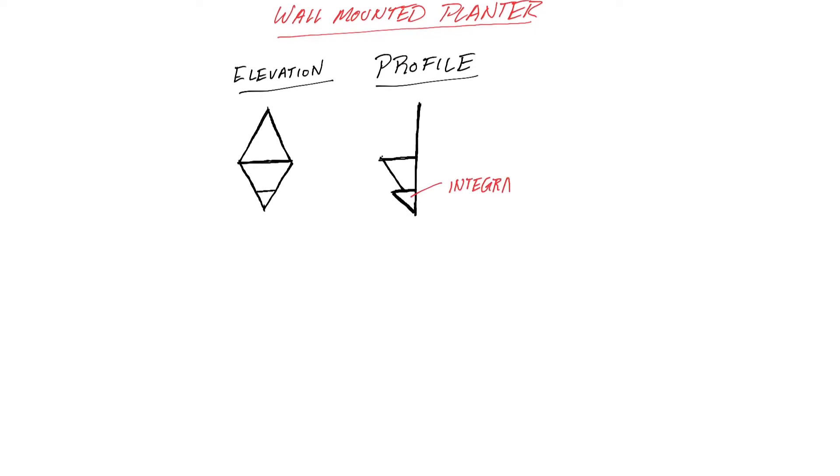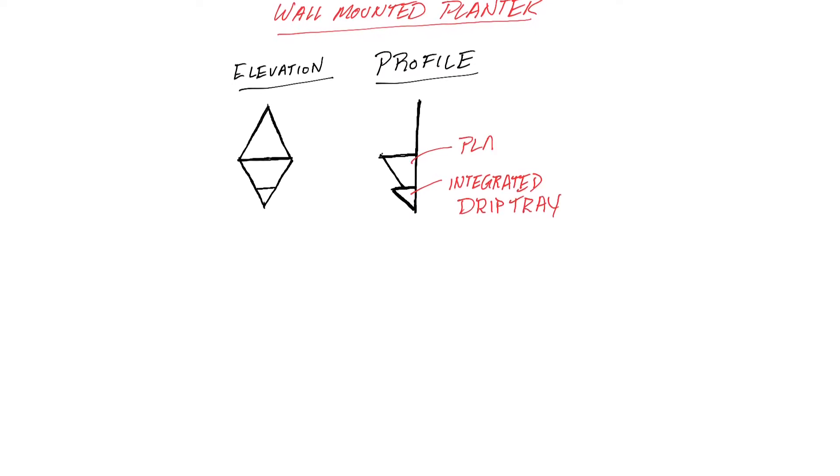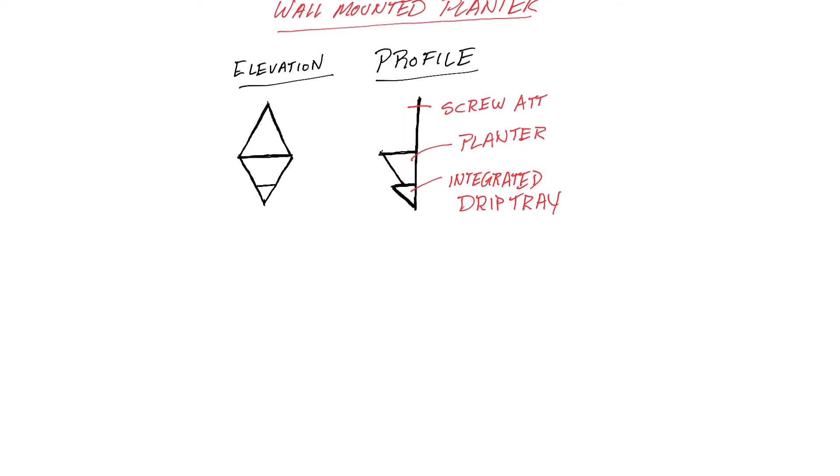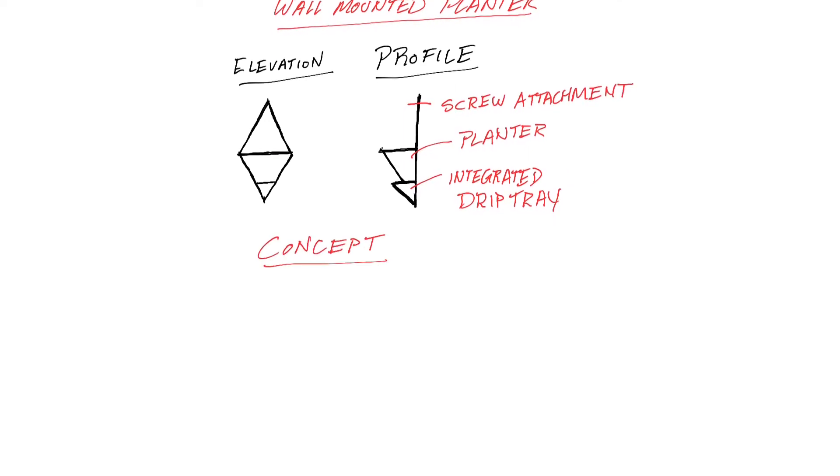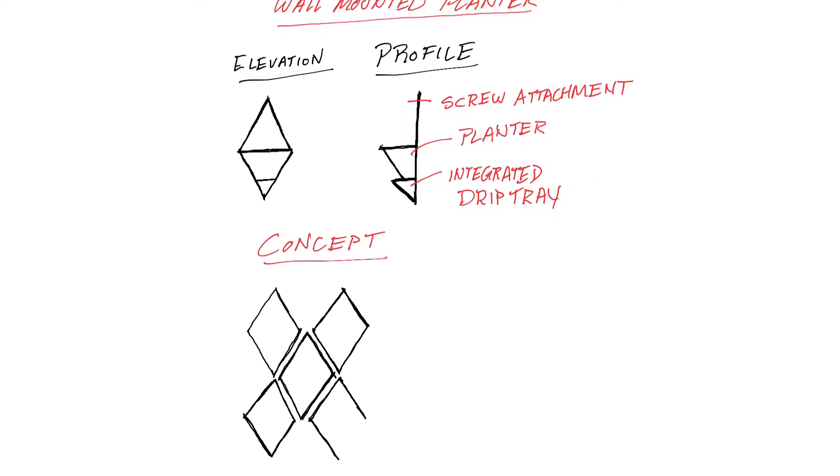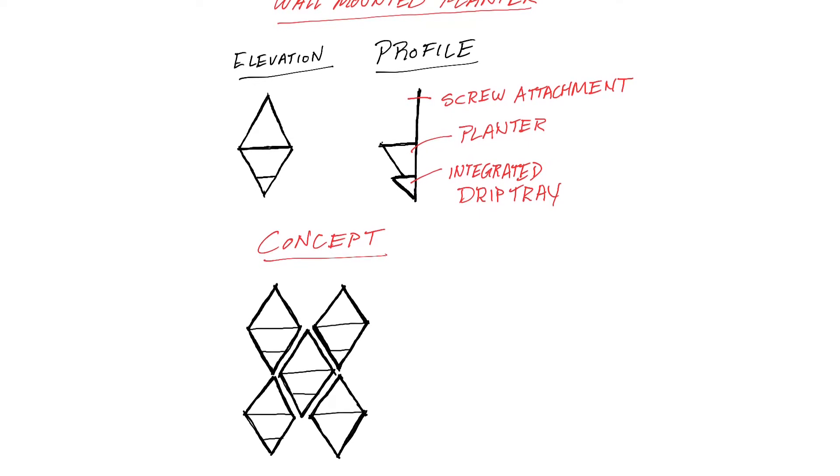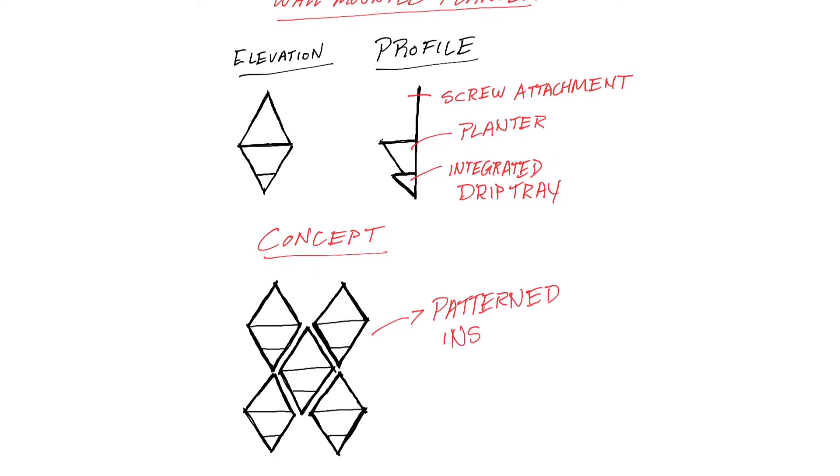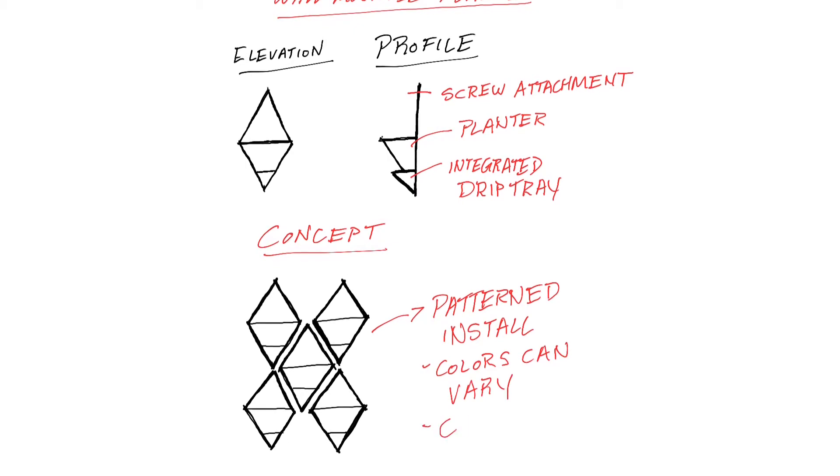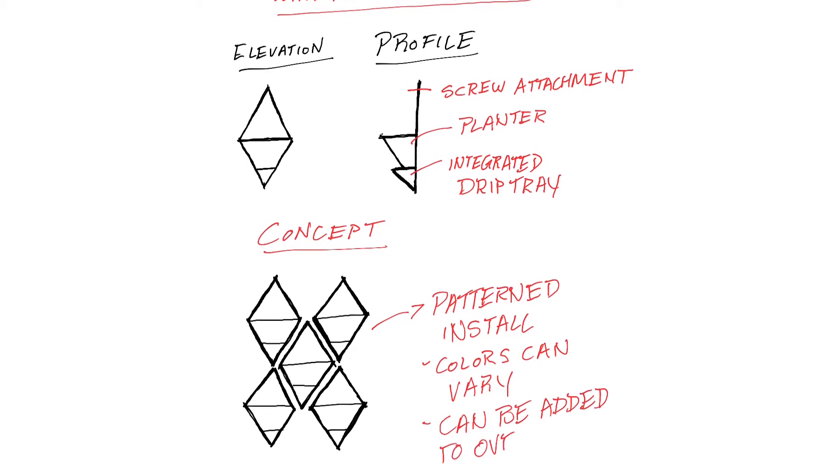I start with a rough sketch to capture my concept for the project. The idea is to 3D print a product where the frame that attaches to the wall is integrated with a planter and drip tray that also provides self-irrigation. As I sketched the idea, I focused on the shape of a diamond because it reduced the overall volume, which also reduces the overall weight of the final installation with soil and plants.